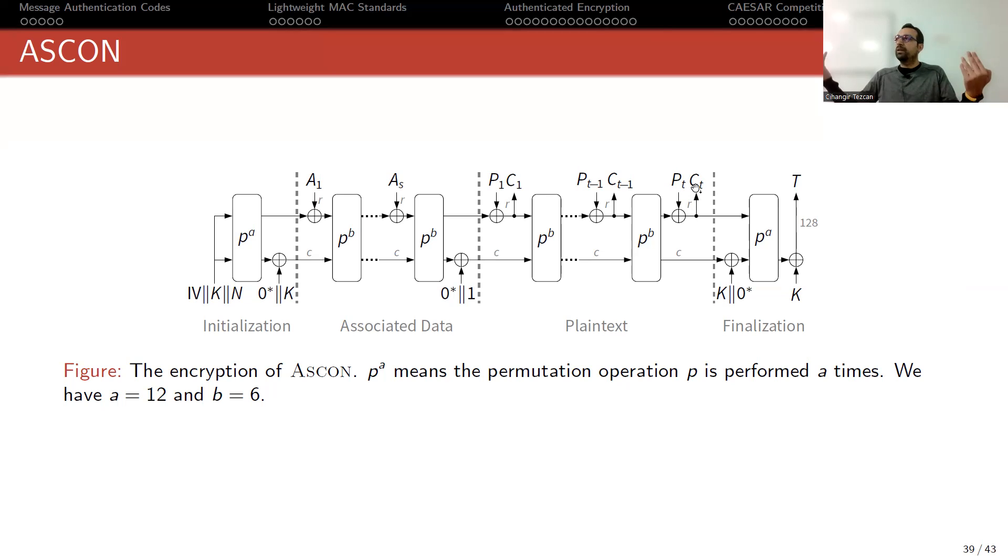You perform an XOR operation here with your secret key, then perform the permutation operation again 12 times. XOR the bottom 128 bits with your secret key, then produce as a tag.